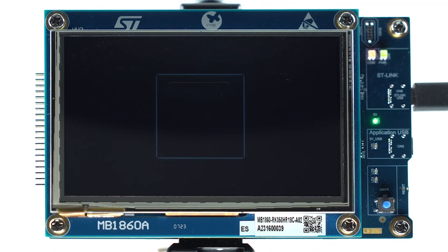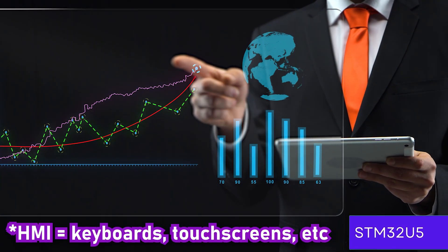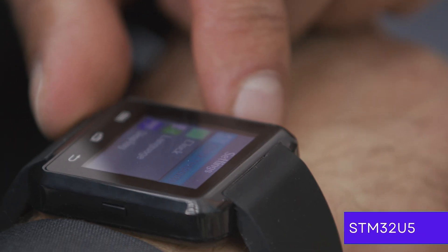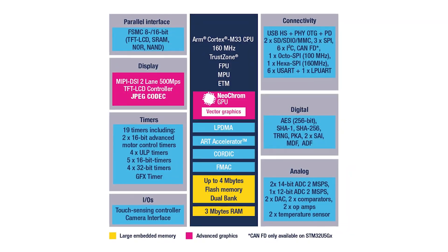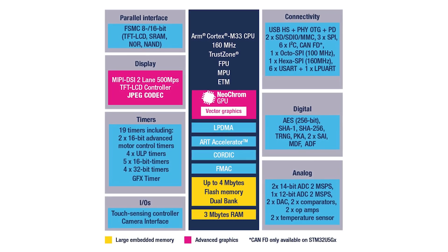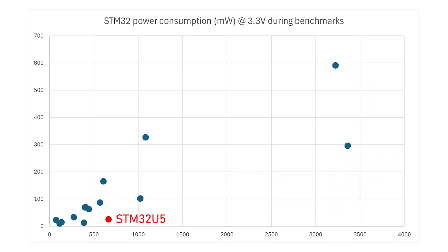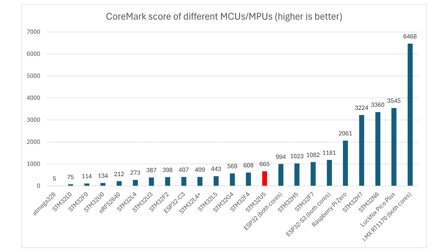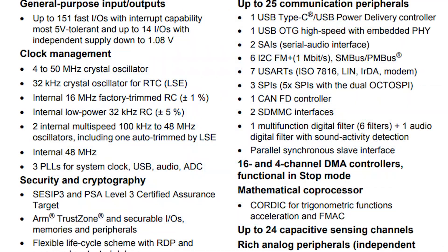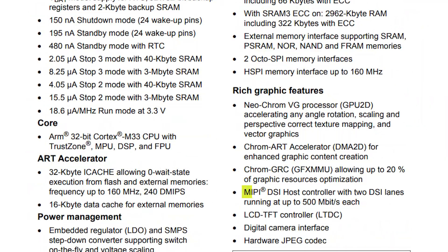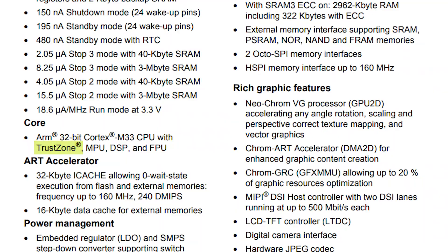Starting with the ultra-low power line, the STM32U5 is targeted towards advanced HMI, home appliances, consumer electronics, and battery-powered devices, since it has huge amounts of flash and RAM, a vector graphics Neochrom GPU option, many advanced low power modes, and great power efficiency, consuming less than 25mW in benchmarks while delivering pretty decent scores. Some notable interfaces of this series include USB high speed with integrated PHY on select variants, MIPI DSI, USB-CPD, a camera interface, and TrustZone security.